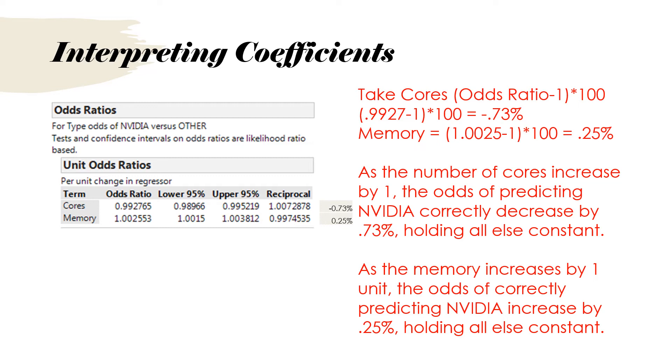Do the same thing for memory, 1.0025 minus 1 times 100, and we get 25%, or .25%. If I interpret that as the number of cores increased by 1, the odds of predicting NVIDIA correctly decrease by .73%, holding all else constant. Then for memory, as the memory increases by one unit, the odds of correctly predicting NVIDIA increase by .25%, holding all else constant.